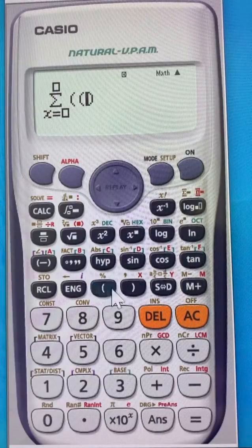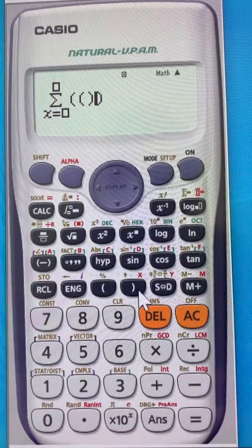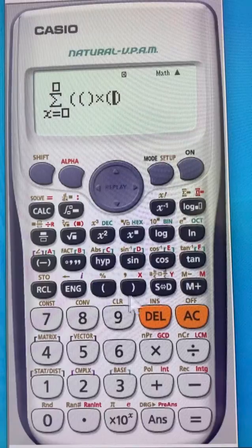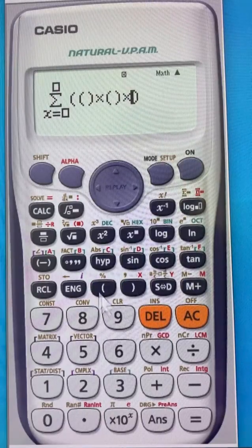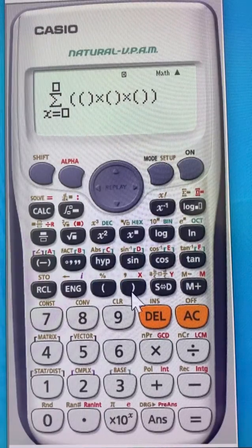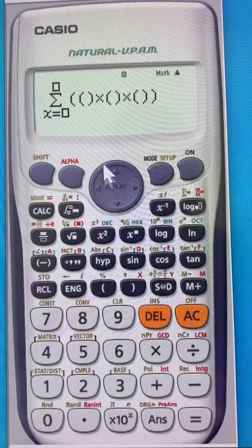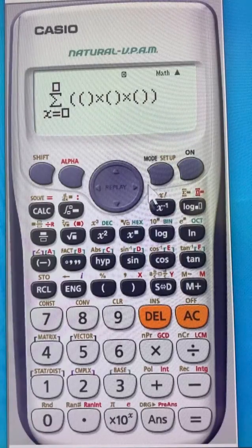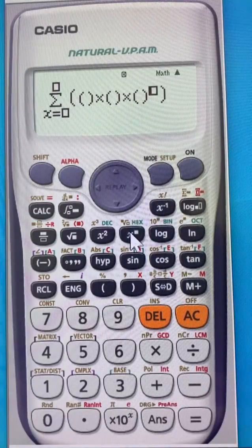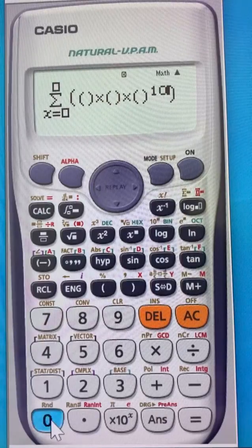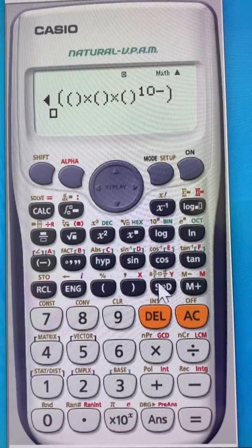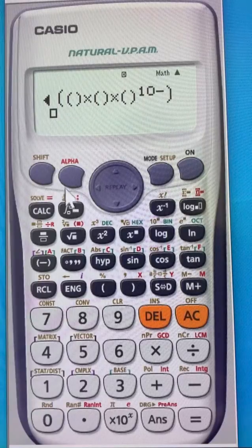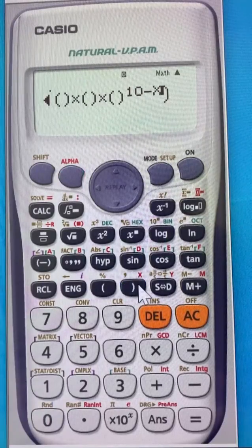Now open parentheses. Within the parentheses, then multiply, open another parentheses, multiply, open another parentheses. You have three things here. And then on this one, you want to raise it to the power N, which is 10, minus X. And to get X, you see that X is here, so you do alpha and X.